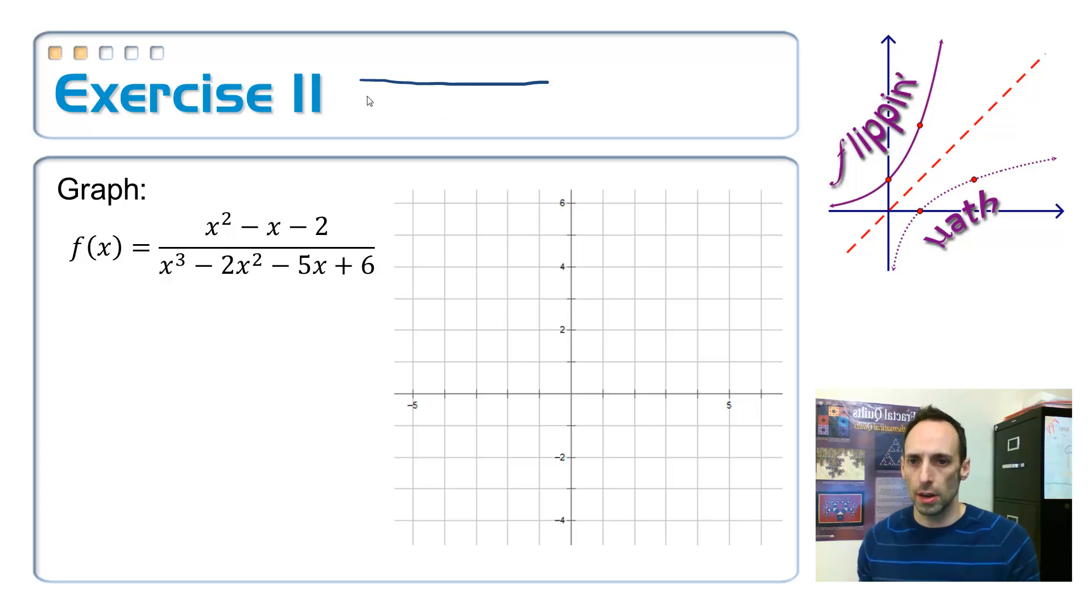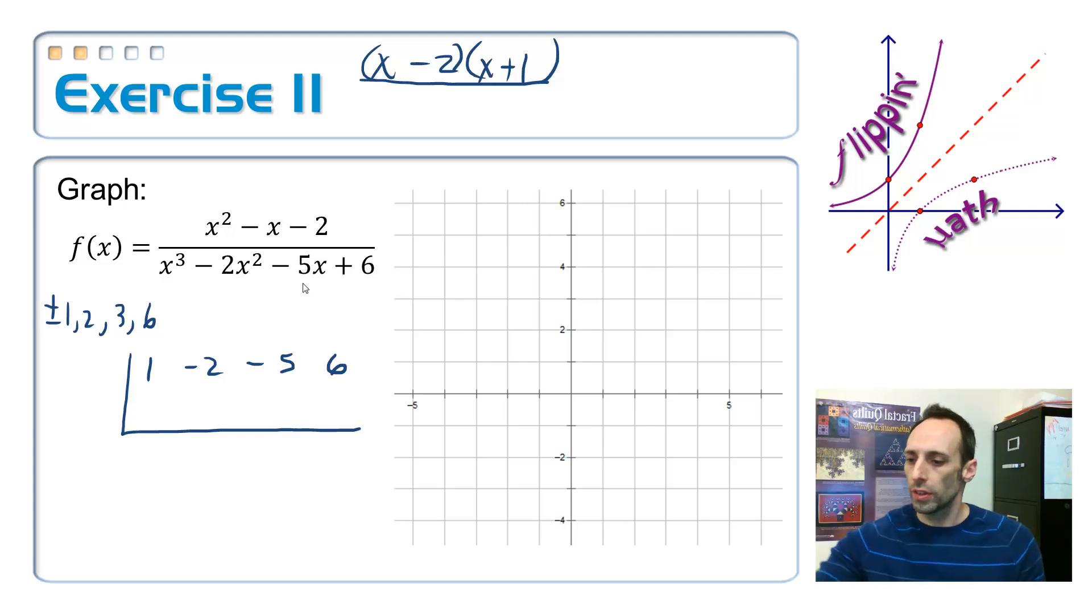So I'll go ahead and factor the top. That should be pretty easy, pain-free. So an x and an x, it's got to be a 2 and a 1, negative 2, positive 1, so that adds up to a negative 1. Okay. So I know that it's possible that I can try plus or minus 1, 2, 3, and 6, all divided by 1, so that's what they are. So, what are we going to try? Let me just go ahead and write 1, negative 2, negative 5, and 6. Well, just for the sake of the length of this video, I'm going to go ahead and cheat on this a little bit.